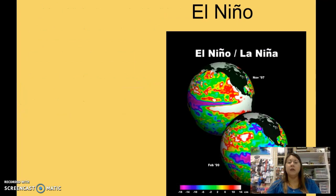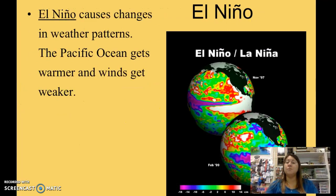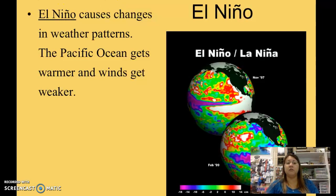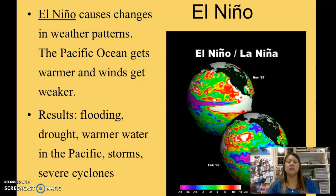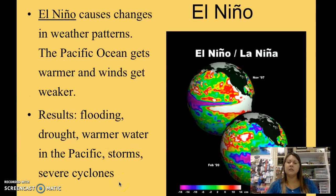The last topic is El Niño. 'Niño' means baby in Spanish. El Niño is a weather pattern that causes strange, severe, and more impactful weather. It happens when the Pacific Ocean gets warmer than usual — generally the Atlantic Ocean, due to the Gulf Stream, is the warmer area. When the Pacific warms, it's considered an El Niño season and can cause flooding, drought, and stronger storms like severe cyclones and hurricanes in the Pacific.